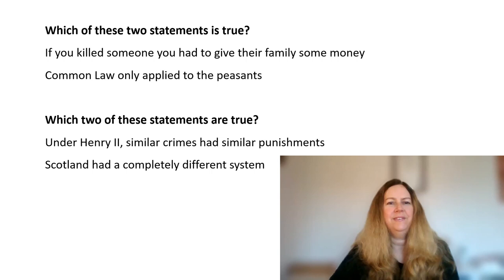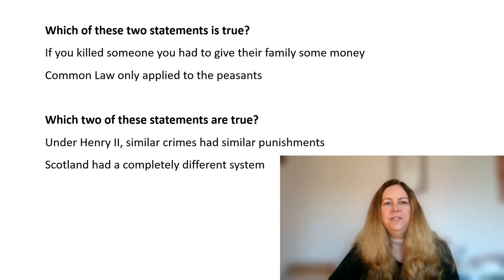Listen carefully to the explanation of changes to law under Norman rule and try to answer the questions. In England, Anglo-Saxon law was carried out at a local level and churches were heavily involved. Crimes were punished either by execution or fines. There was also something called a wereguild, which was a fine for killing or injuring someone.